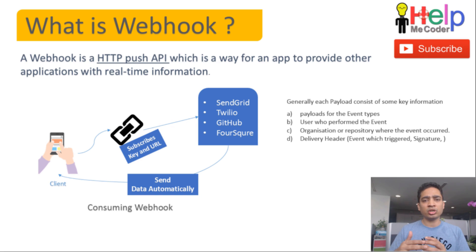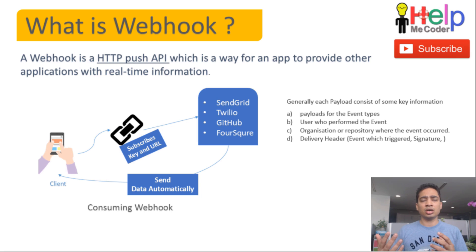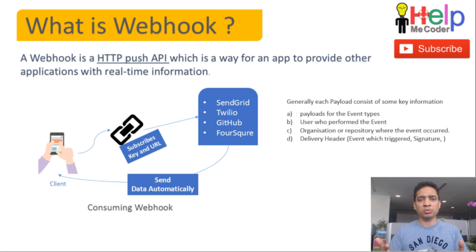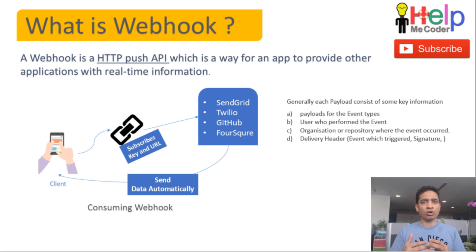There are many different companies that have started using webhooks. For example, GitHub is doing a lot of things with webhooks. Then we have SendGrid, which has a couple of webhook services — for example, a service where you can subscribe to be notified if there is an unsubscribing mail or a bounce mail. Other companies like Twilio, Foursquare are also coming up with webhooks. This is a very interesting approach of how the server and client communicate on the web.